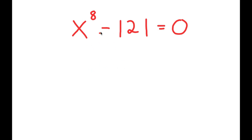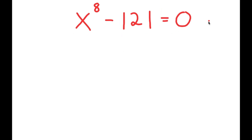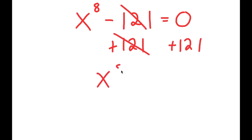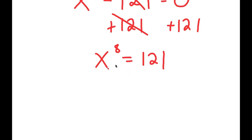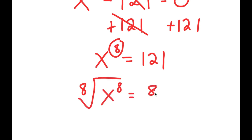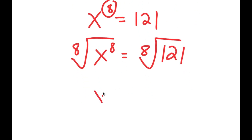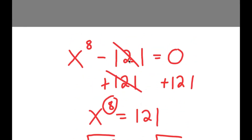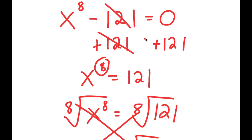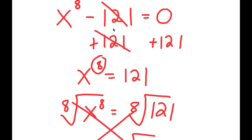In this video, I'm going to teach you how to solve this exponential equation. We have x to the power of 8 minus 121 is equal to 0. What most people would think to do is add 121 on both sides to get x to the power of 8 equals 121, then take the 8th root on both sides to get the 8th root of 121. But this method is actually wrong because there are actually many more solutions than just two to this equation.